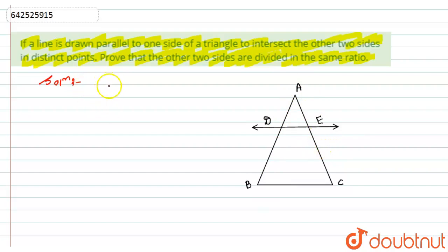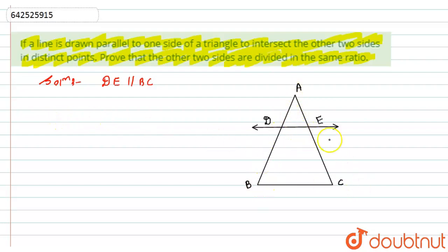Here, what is given to us: DE is parallel to BC, and we have to prove that the other two sides are divided in the same ratio. If we look at the figure, we can see that ABC is the bigger triangle and ADE is the smaller triangle.